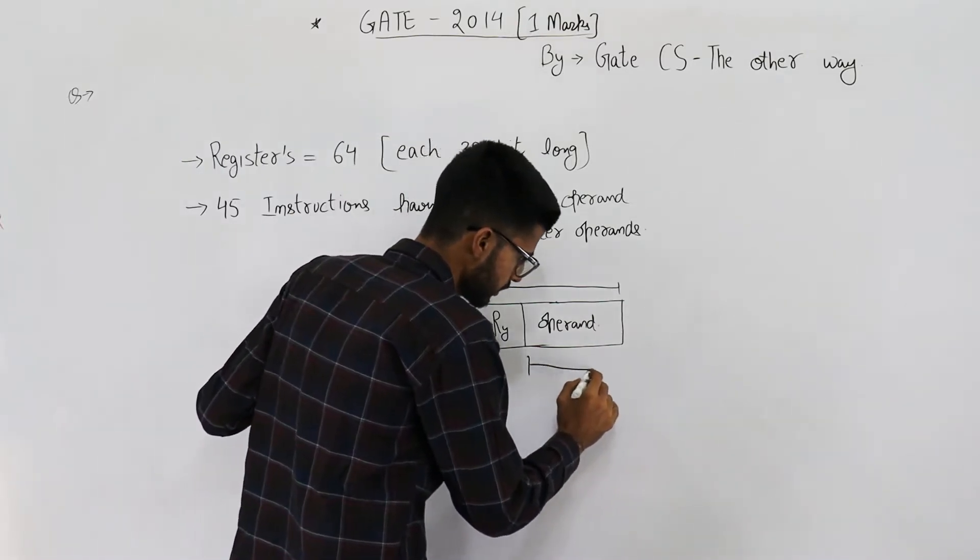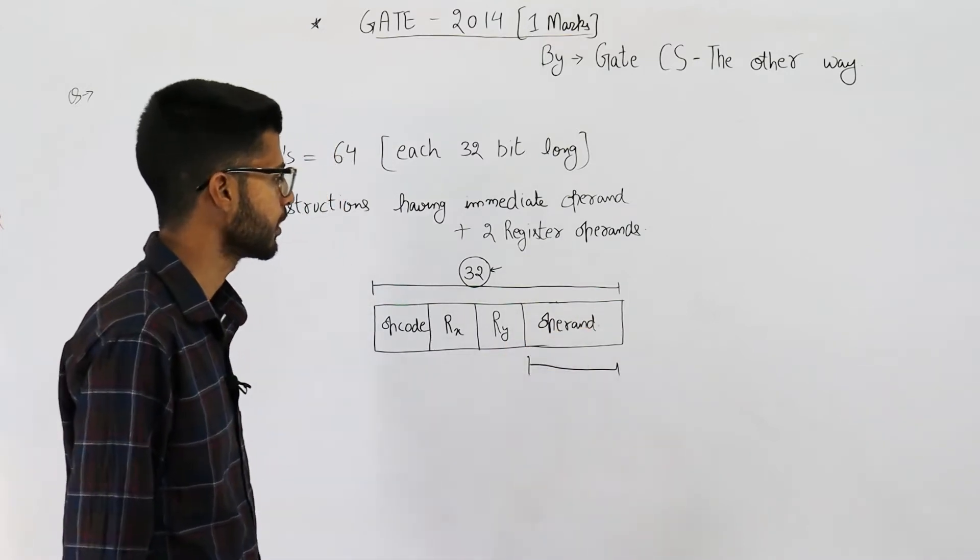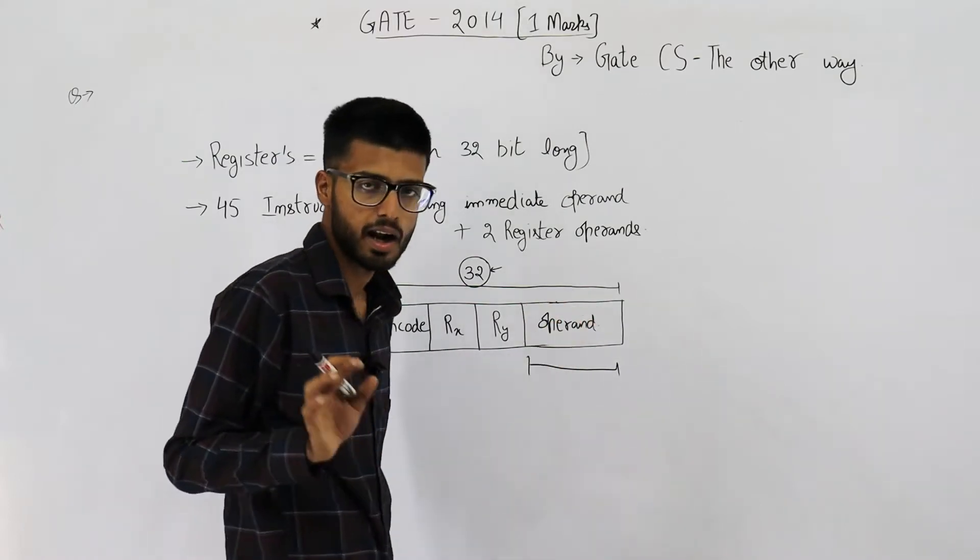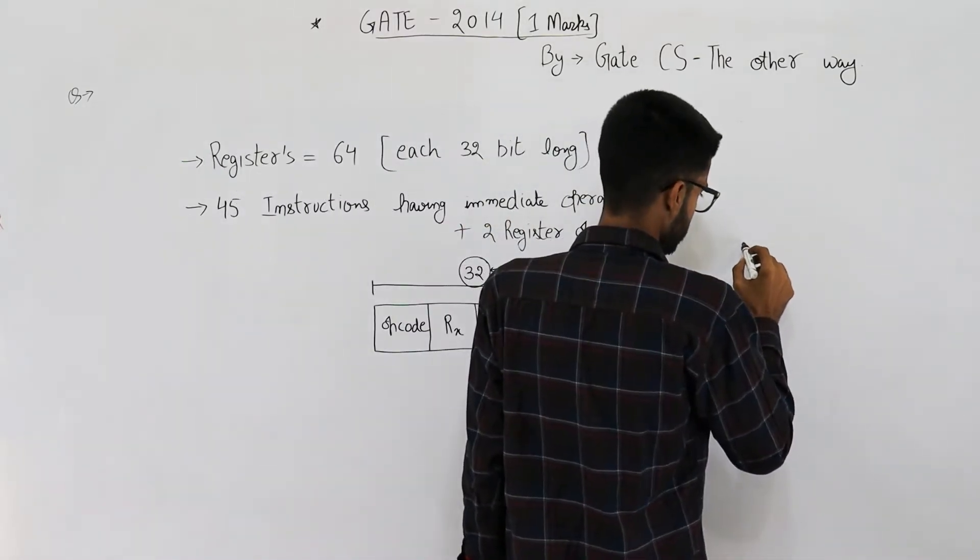First of all, this is an unsigned number, and you very well know the maximum value represented by unsigned representation is 2 power n minus 1.